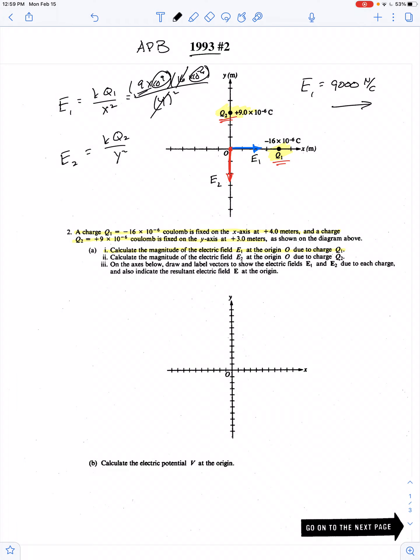So E2 is equal to 9 times 10 to the 9th times 9 times 10 to the negative 6th divided by 3 meters squared. And again, 3 squared cancels with this 9. So it looks like E2 is also 9,000 newtons per coulomb, but instead pointing down.